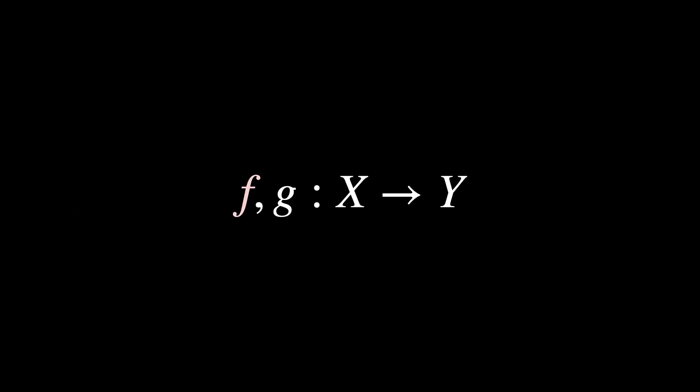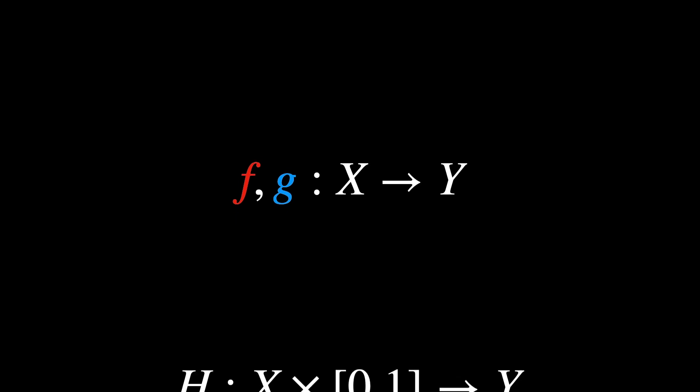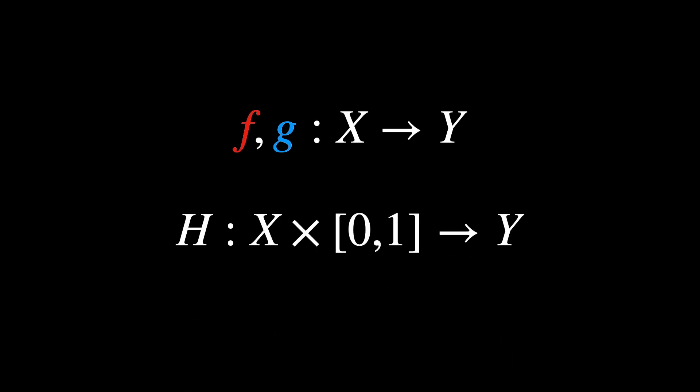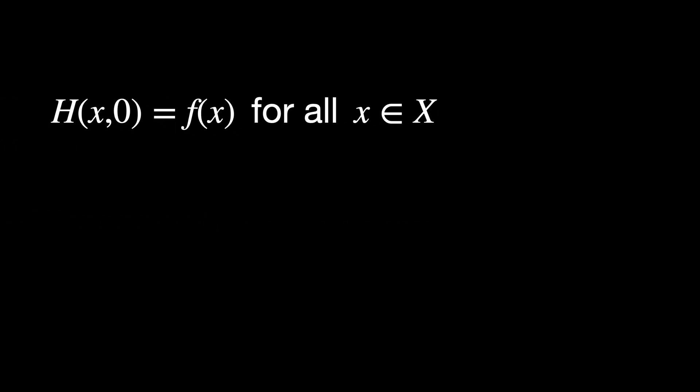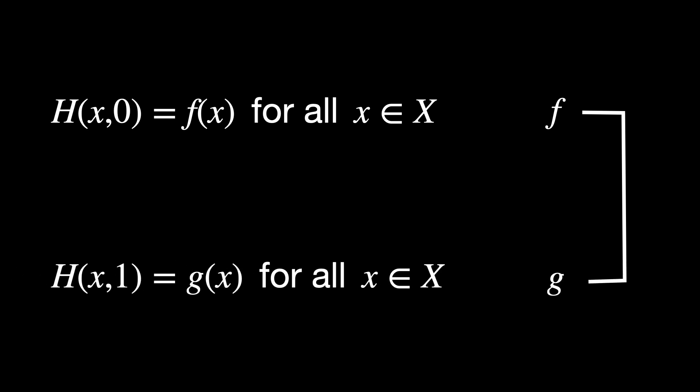When you have two continuous functions f and g from X to Y, a homotopy between f and g is a family of continuous functions h from X cross [0,1] to Y, such that h equals f for all points in X at the beginning, and h equals g for all points in X at the end. Essentially, a homotopy shows how a function can be continuously transformed into another function, and it defines an equivalence relation on the set of all continuous functions from X to Y.